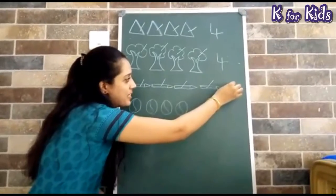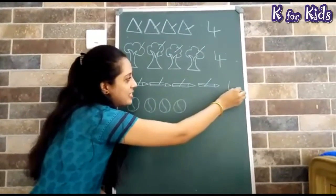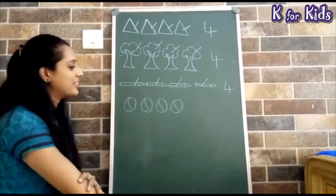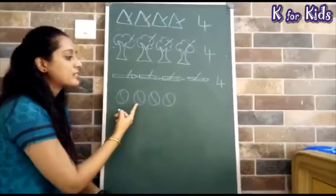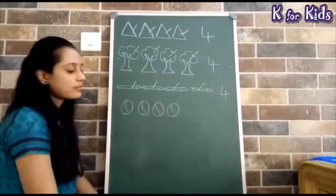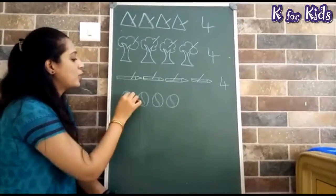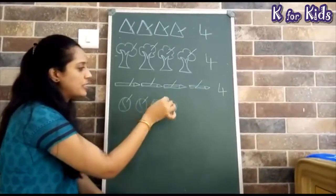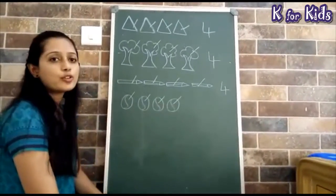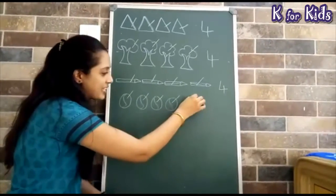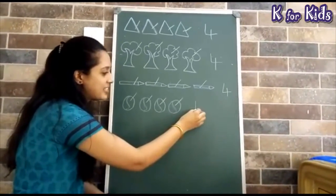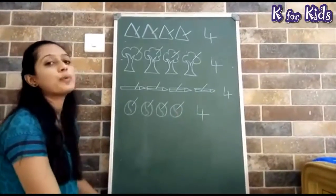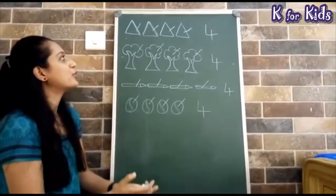So here we write it again. Standing line, sleeping line and standing line. After that, what do we have? Ball. Count the balls: 1, 2, 3 and 4. So let's write it again — standing line, sleeping line, standing line. Our 4 is made. 4.